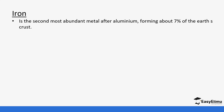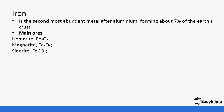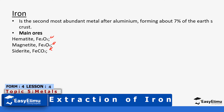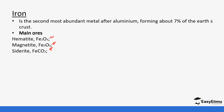Iron is the second most abundant metal after aluminium, so it is very commonly found in the earth's crust. The main ores are hematite, magnetite, and siderite. Make sure you are able to identify their formulas — hematite is iron(III) oxide, magnetite is iron(IV) oxide, and siderite is an iron carbonate.